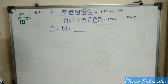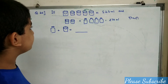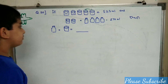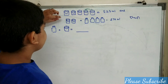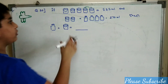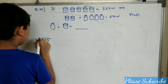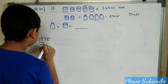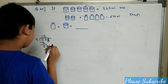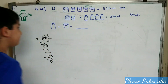Question number 20. If 5 buckets equals 525 ml and 2 buckets plus 4 bottles equals 270 ml, then what is 1 bottle plus 1 bucket? We know 5 buckets is 525 ml, so dividing 525 by 5, the capacity of 1 bucket is 105 ml.